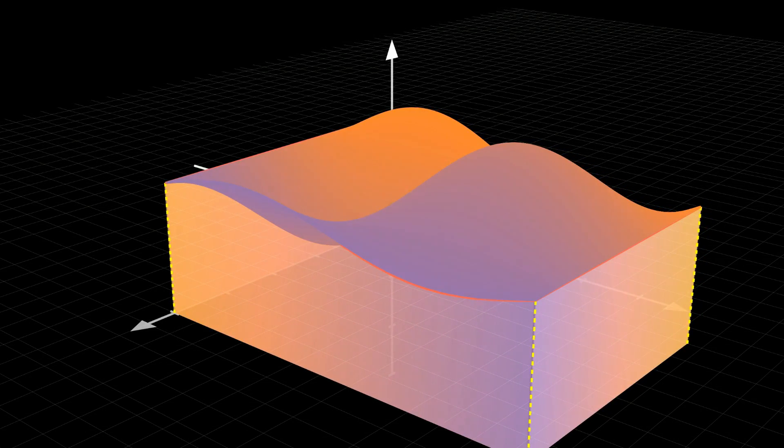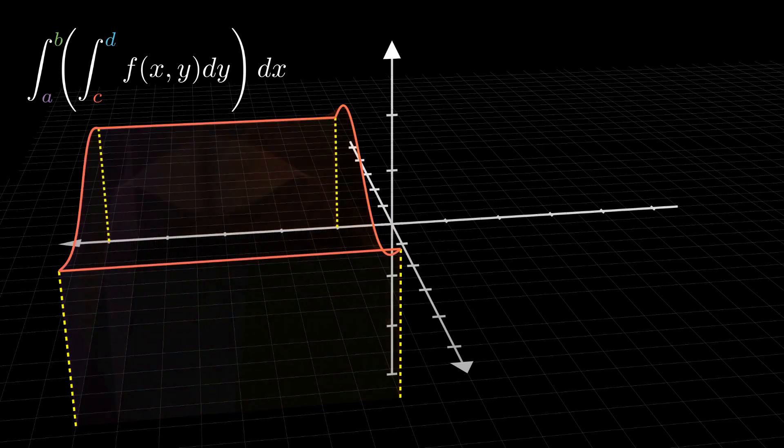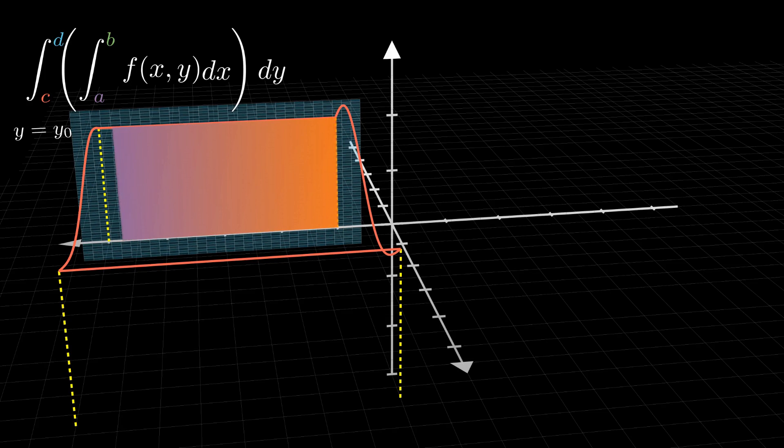From this point of view, you can rightly say that a double integral is an integral of integrals, because we are making sums of areas, which are, in turn, sums of rectangles. Furthermore, the volume will be the same even if we swap the order of integration, because the process will be the same.